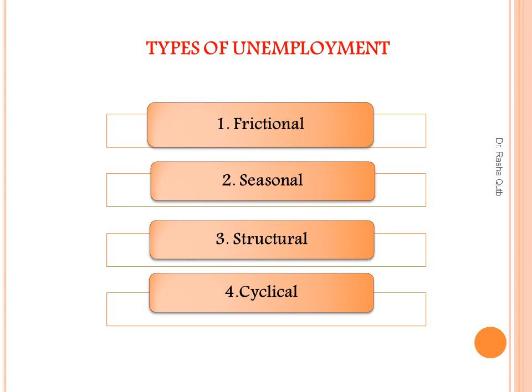The second type is seasonal unemployment. It refers to people who are out of work and looking for a job during the off-season. For example, ice cream sellers work during the summer, and during the winter they are unemployed. This type of unemployment follows predictable seasonal patterns.